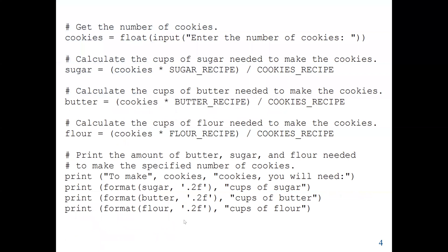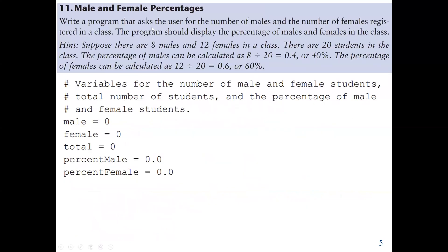Now let's go to the second question. We should write a program that asks the user for the number of males and females registered in a class, then display the percentage of males and females in the class. The hint is: suppose there are 8 males and 12 females — that's 20 students total. The percentage of males is 8 divided by 20, which is 40%, and females is 12 divided by 20, which is 60%.